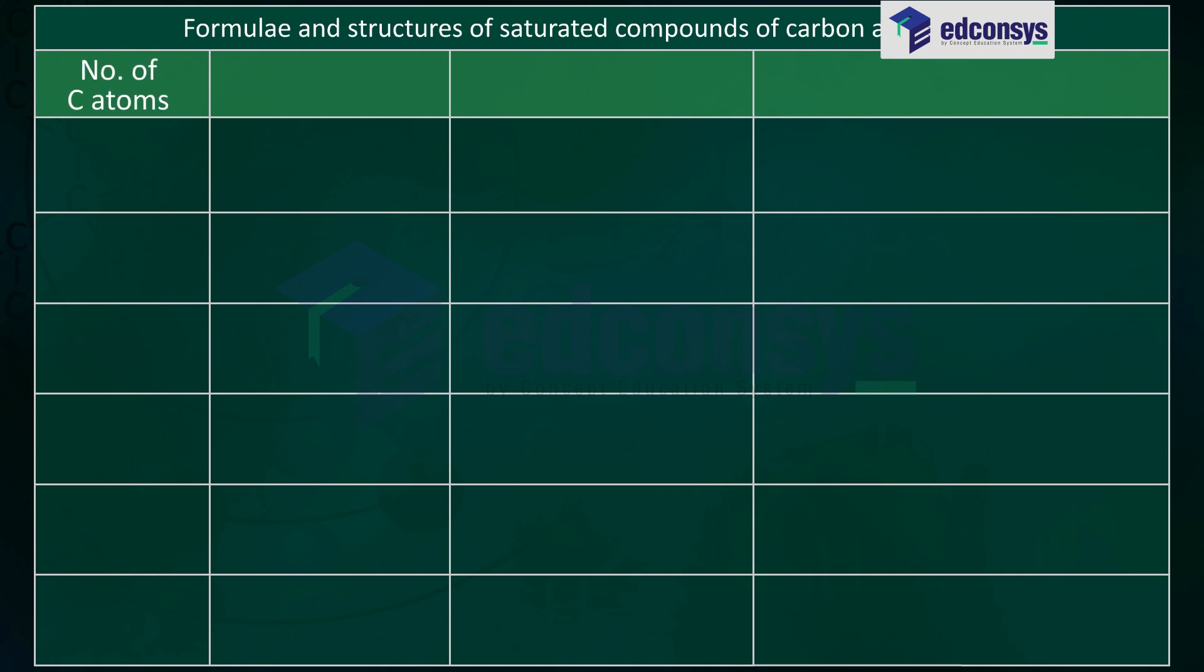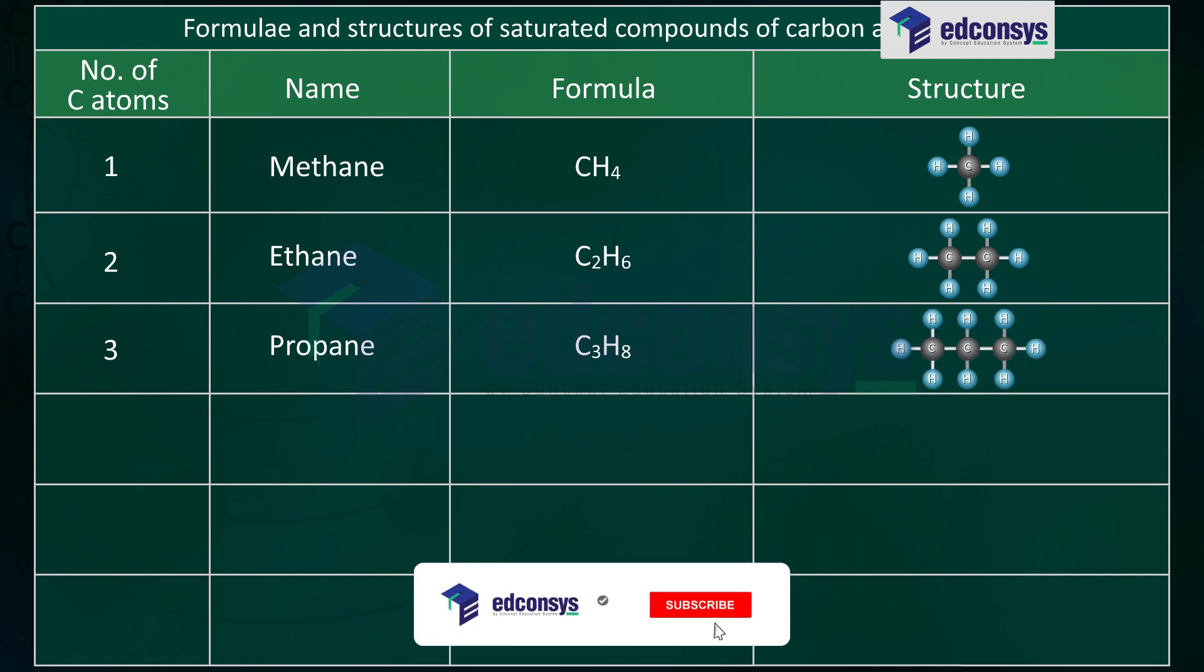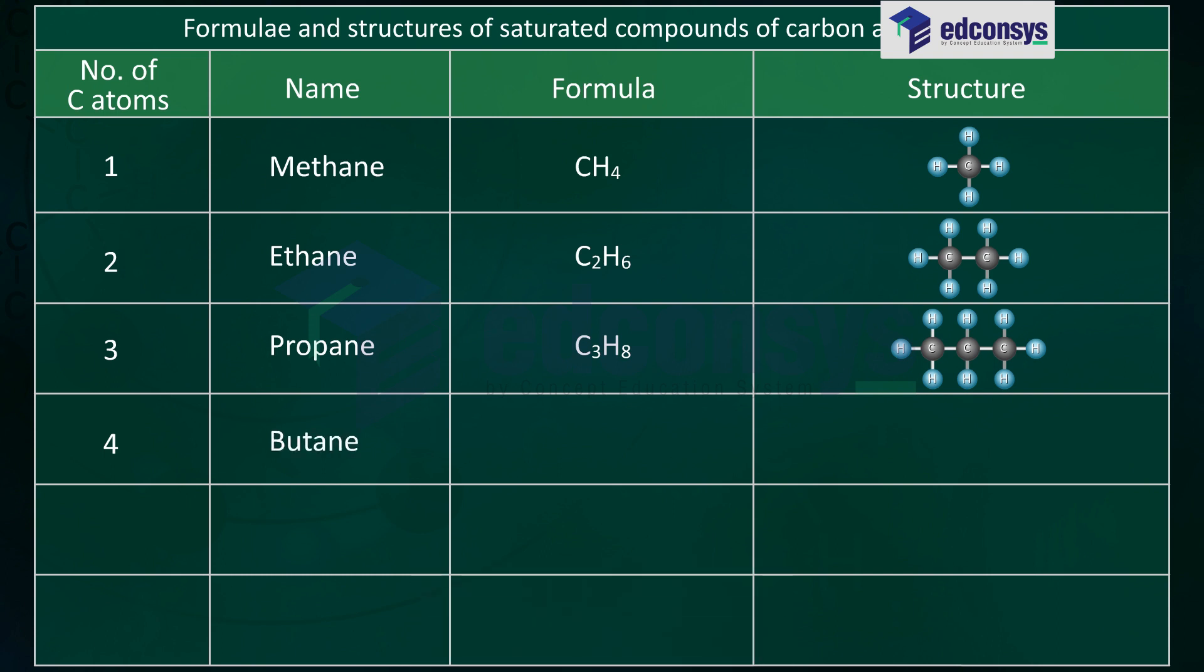Number of carbon atoms 1, name methane, formula CH4. Number of carbon atoms 2, name ethane, formula C2H6. Number of carbon atoms 3, name propane, formula C3H8. Number of carbon atoms 4, name butane, formula C4H10.